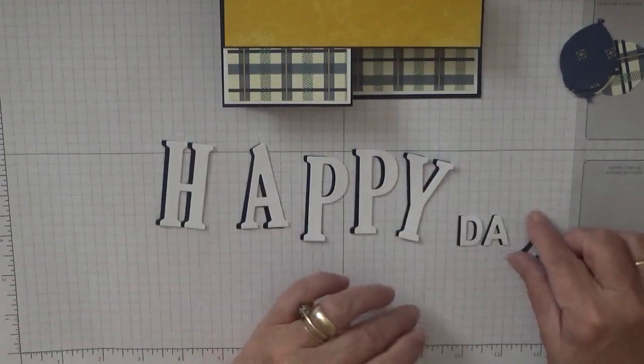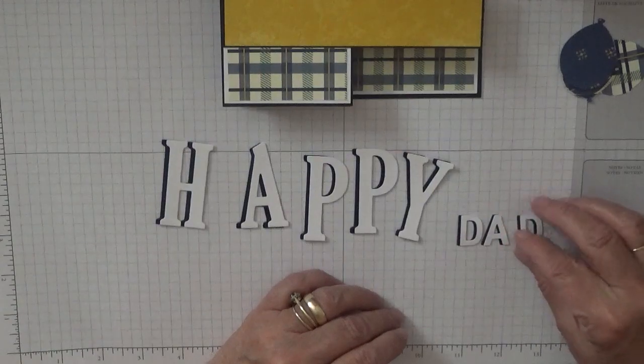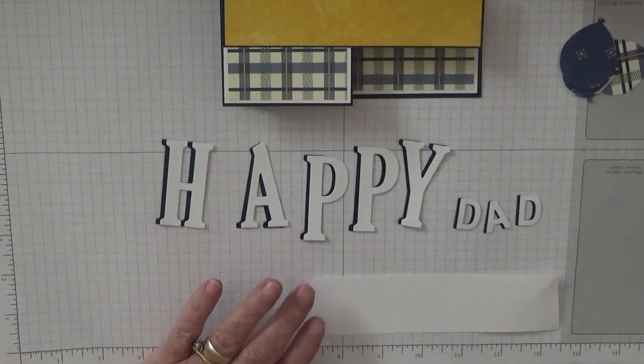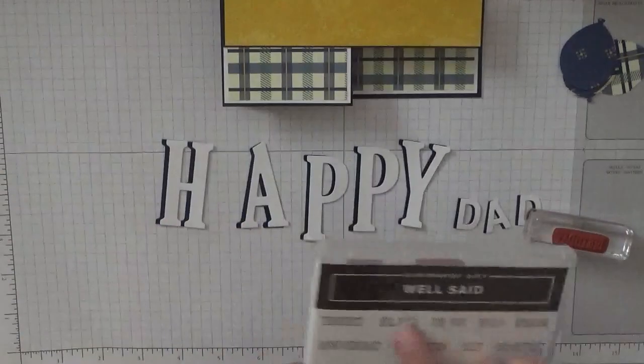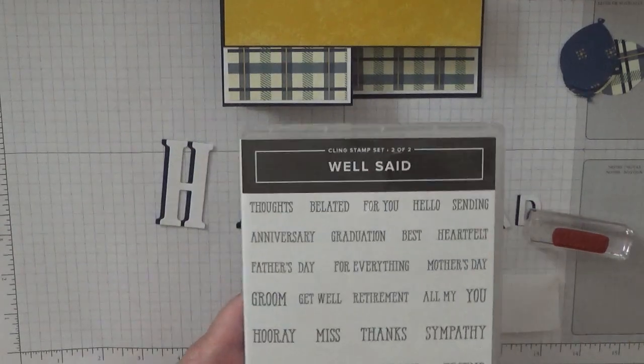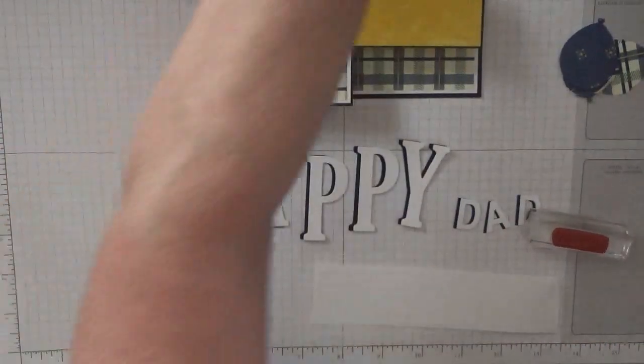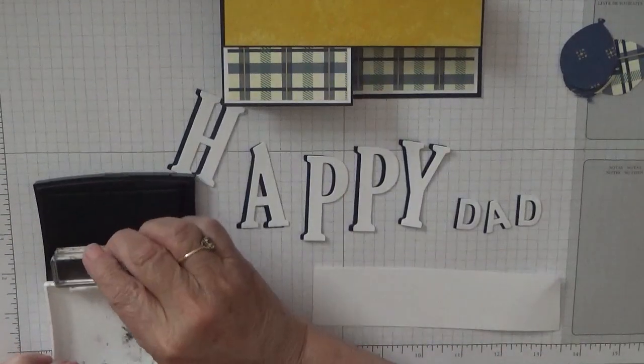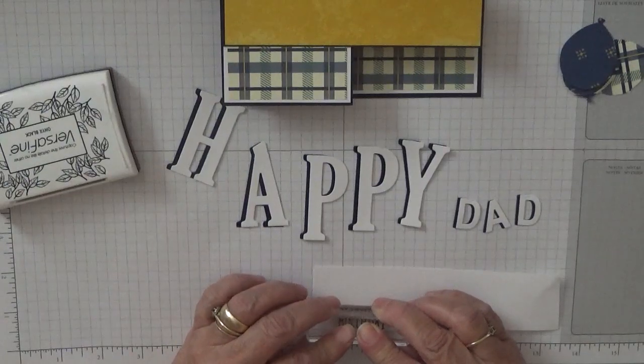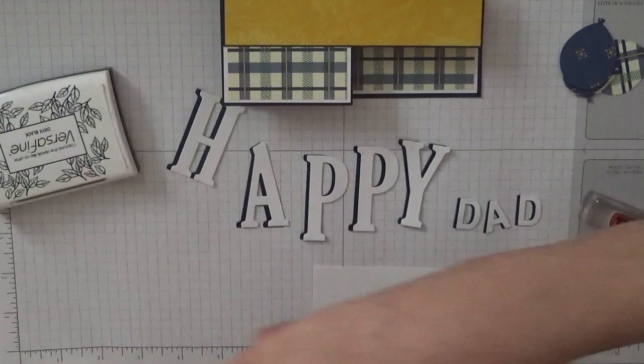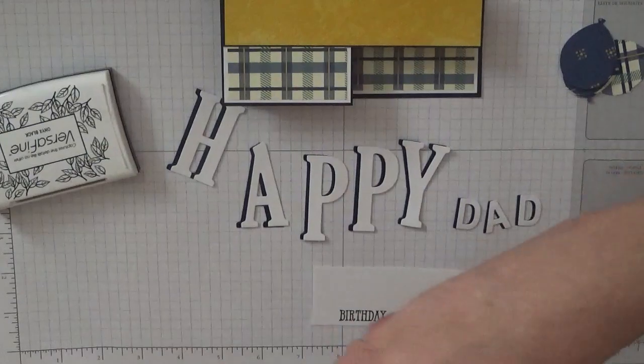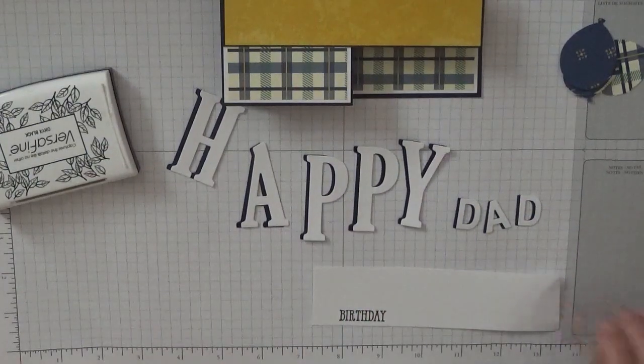That's a good side. Right, now we have the happy, happy dad. So we need to stamp. I've got a bit of scrap here and I've got the word birthday from Well Said. And on here it is, there on the bottom. So I'm just going to stamp that out in black ink. And stamp that. And then we need to cut that out.